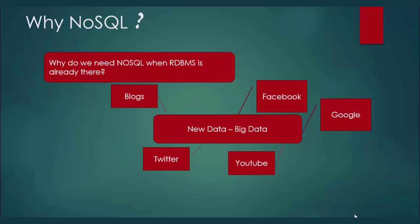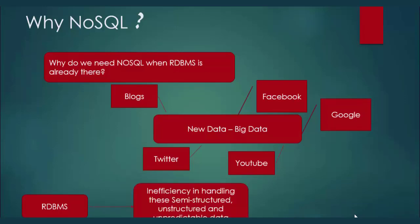What we are getting from these sources is unpredictable, unstructured, and in huge amounts on a daily basis. RDBMS is designed to handle structured data and can only handle data up to some limit. These data are unstructured and coming in huge amounts, so RDBMS failed to handle this kind of Big Data. This inability of RDBMS has given birth to a new database management system known as NoSQL.